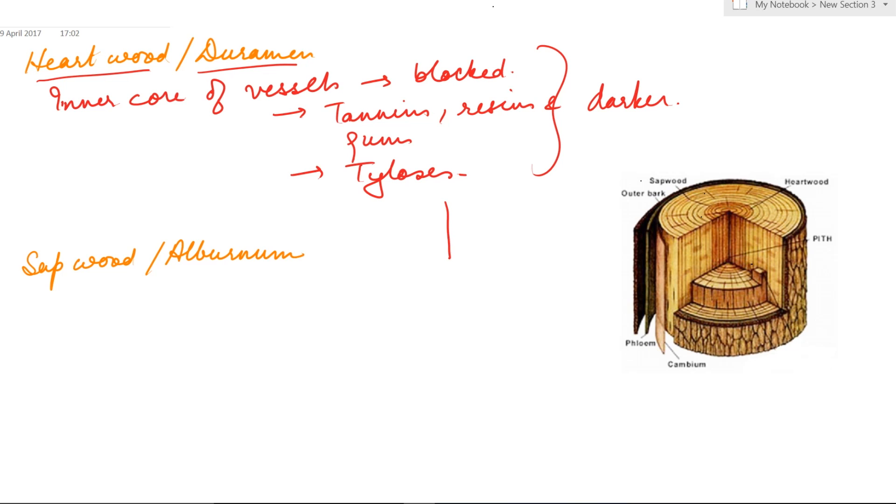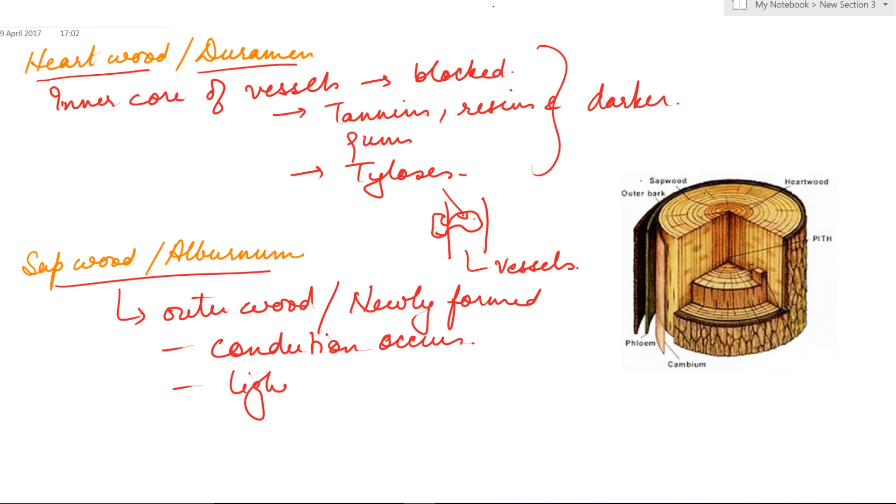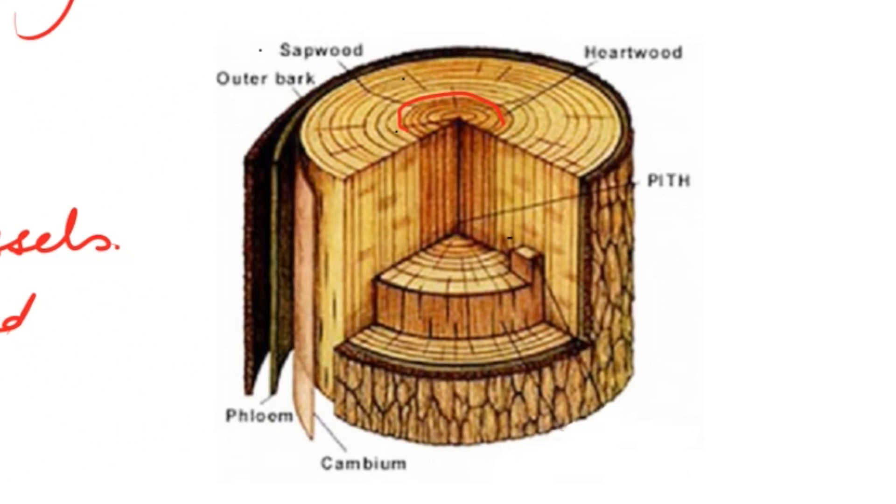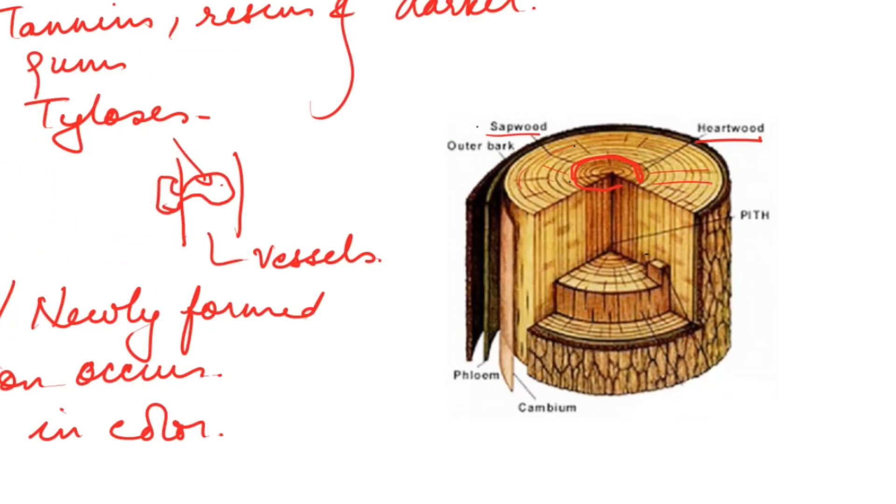Tylosis are balloon-like ingrowths of the parenchyma cells into the lumen of the vessels, blocking the vessels. While the outer wood that is newly formed, through which conduction occurs and is lighter in colour, forms the sapwood or the alburnum. In this diagram we can see that the darker inner part is the heartwood through which no conduction occurs, while the outer part which is lighter in colour through which conduction occurs is the sapwood.